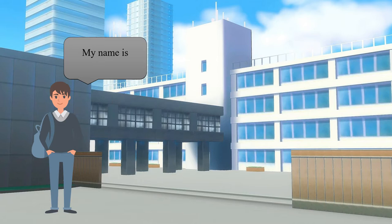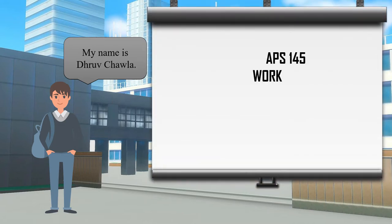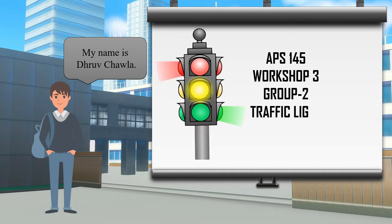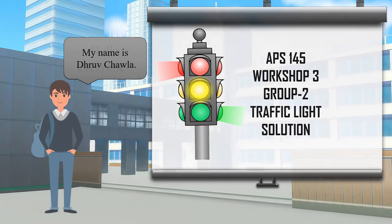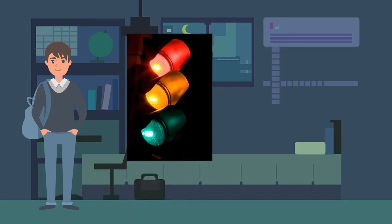Hello everyone. My name is Dhruv Chawla. The task is to upgrade the current 3-light, 3-state traffic light system to a 4-light, 5-state system to address an increasingly heavy demand for left turns at a busy intersection in downtown Toronto.